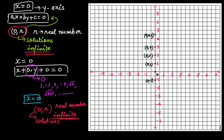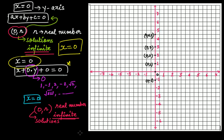So x = 0 is the equation that we were looking for — it is the equation of the y-axis. It's exactly similar to what we learned in the cases of x = 3, x = A, x = 5, x = −5 and so on. In our next video tutorial we will discuss the equations of lines parallel to the x-axis and the equation of the x-axis itself.